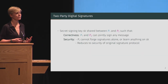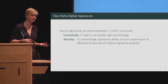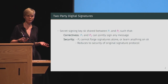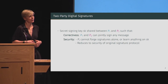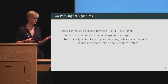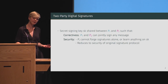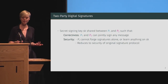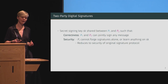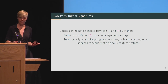We focus on the two-party setting, which would allow you, for instance, to share your secret key between your phone and your laptop. The secret signing key is shared between two parties, P1 and P2, such that collaboratively they can sign any message, but alone, neither party should be able to forge signatures or learn anything about the reconstructed secret key.